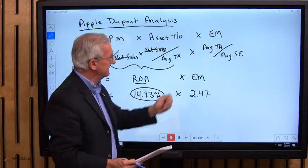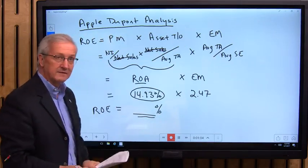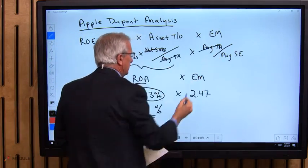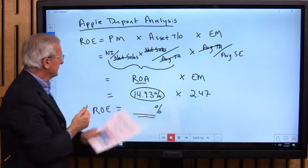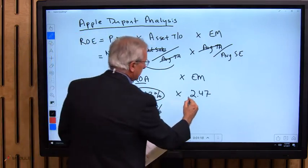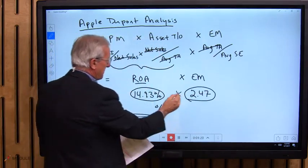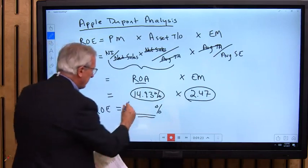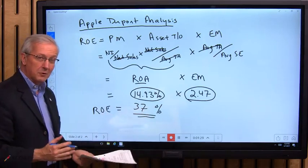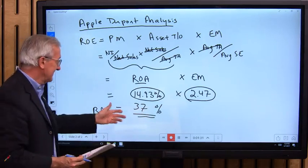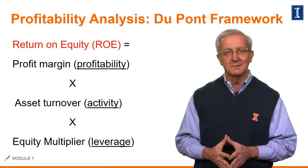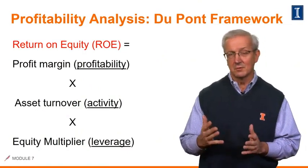The third part of our equation is the equity multiplier, which is average total assets divided by average stockholders' equity. Crossing out the like terms, what we're left with for return on equity is net income divided by average stockholders' equity. The equity multiplier for Apple is 2.47. Multiplying those two out, that comes out to roughly 37 percent — a return on equity of almost 40 percent. When I see numbers like that, it makes me glad that I'm an investor in Apple stock. Hopefully this whiteboard example helped us understand the relationship with the DuPont analysis a whole lot better.